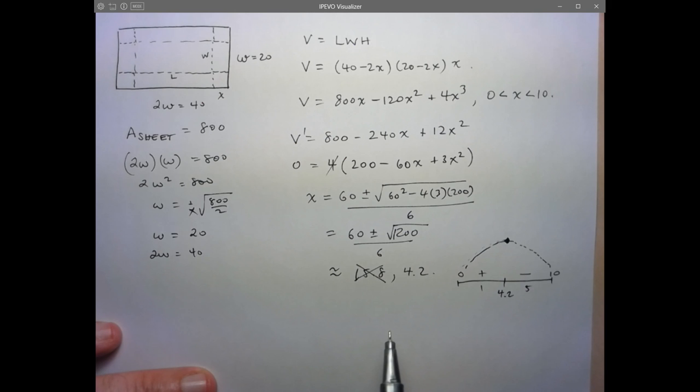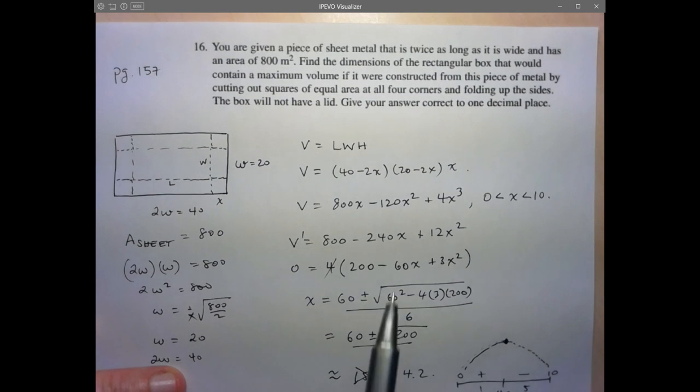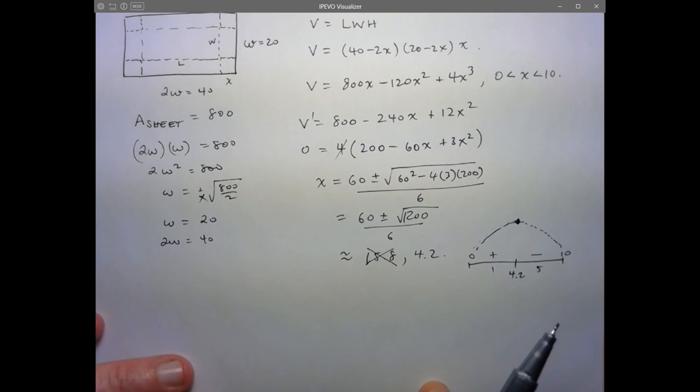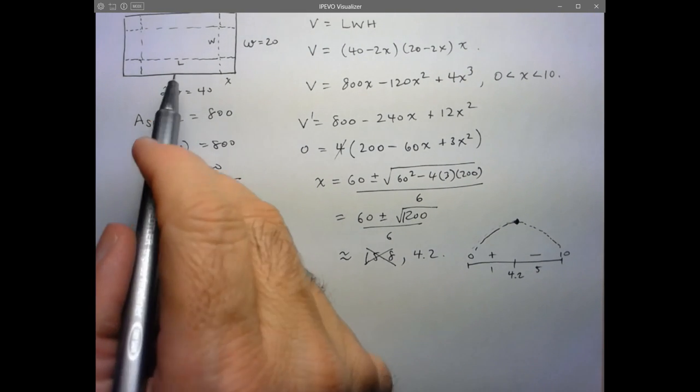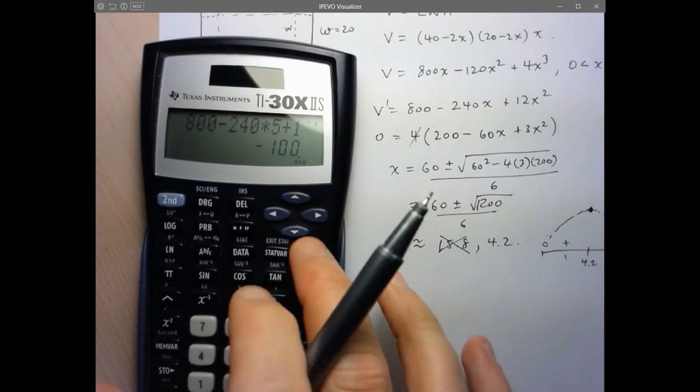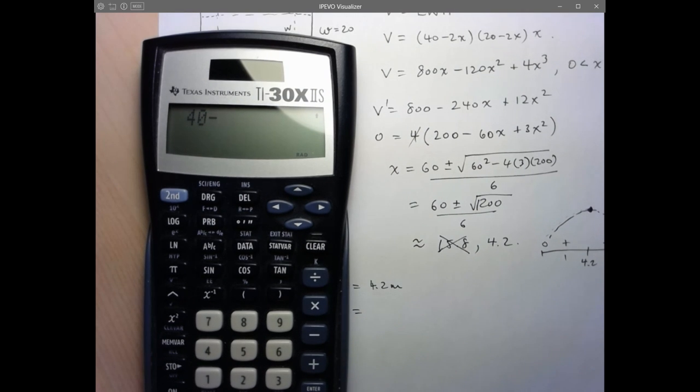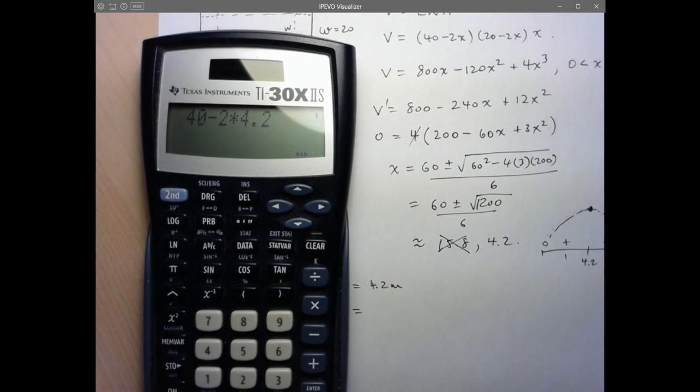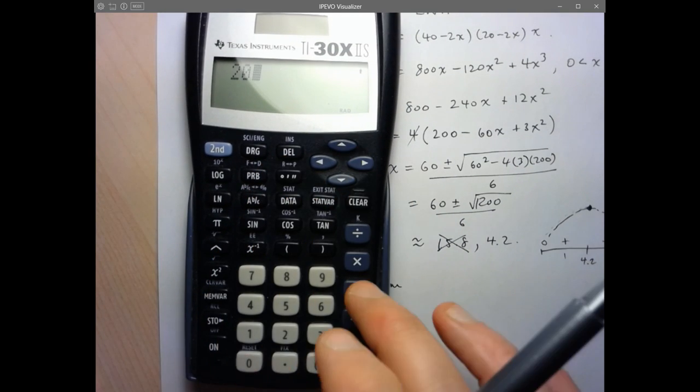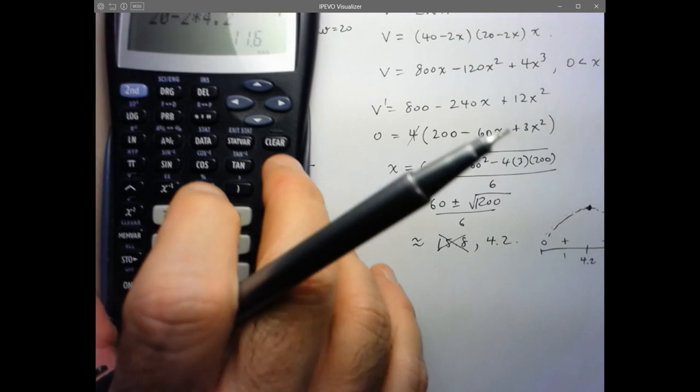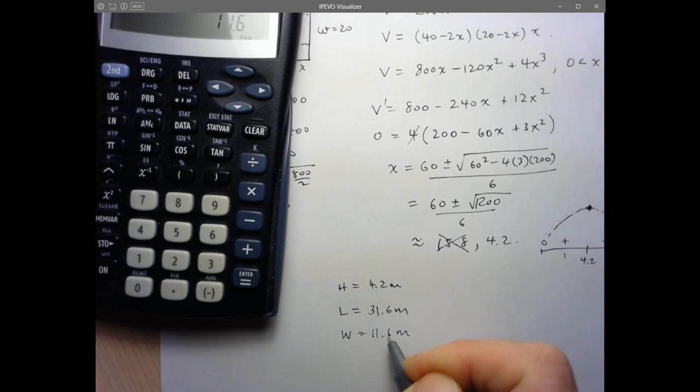Let's take a look at what they were looking for. They want us to find the dimensions of the box. We know that the height was going to be equal to x. So that's 4.2 meters. The length we remember is 40 minus 2x. So let's just do 40 minus 2 times 4.2. And that's 31.6. And then the width is just going to be 20 minus 2x. So 20 minus 2 times 4.2. And that gives me 11.6 meters.